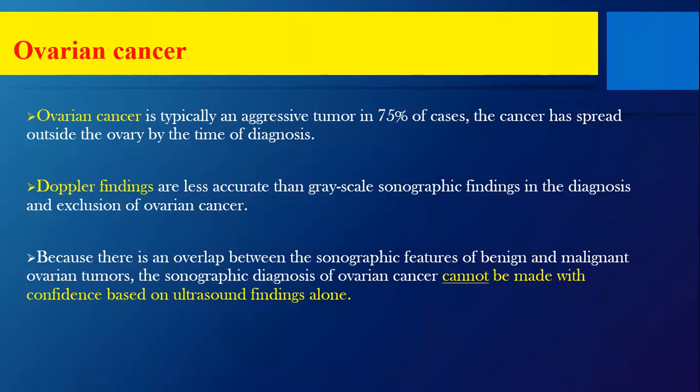Now to ovarian cancer. We cannot determine the type of tumor nor its nature — benign or malignant — but we can suggest. Let's discuss some criteria that can help us weigh one option against the other, to determine whether it is more towards benign or malignant.